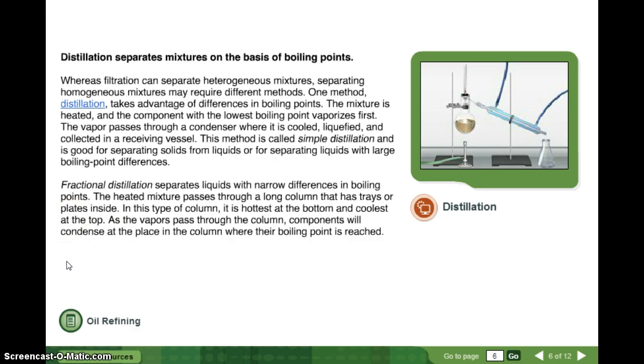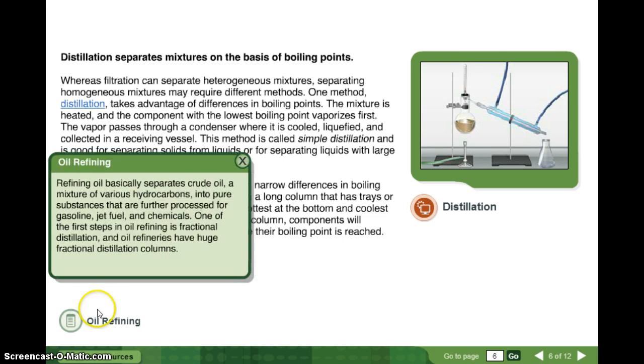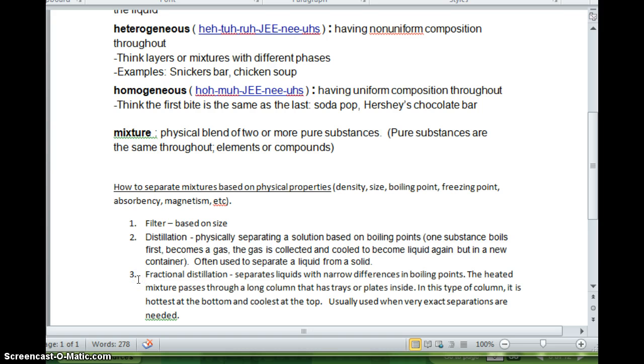Now we're going to go on to fractional distillation. Fractional distillation separates liquids with narrow differences in boiling points. The heated mixture passes through a long column that has trays or plates inside. This type of column, it is the hottest at the bottom and coolest on the top. As the vapor is passed through the column, components will condense at the place in the column where their boiling point is reached. Oil refining. Refining oil basically separates crude oil, a mixture of various hydrocarbons, into pure substances that are further processed for gasoline, jet fuel, and chemicals. One of the first steps in oil refining is fractional distillation, and oil refineries have huge fractional distillation columns.